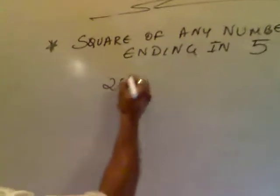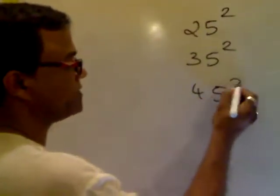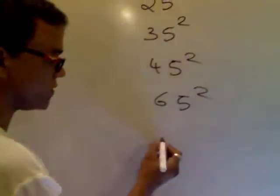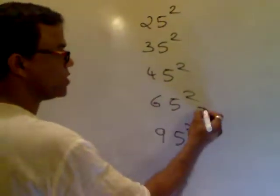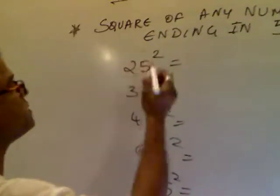For example, 25 square, 35 square, 45 square, 65 square, 95 square. All these numbers end with 5. Very simple.